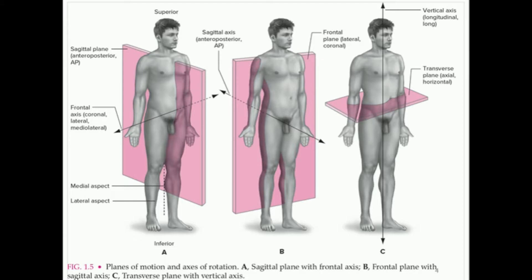A frontal plane separates the body into a front and back half. For example, a frontal plane might separate the rectus abdominis in the abdominal region from the gluteus maximus on the posterior side. So the frontal plane separates front and back halves.